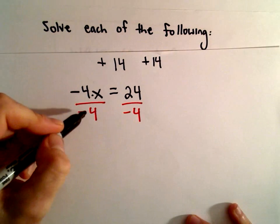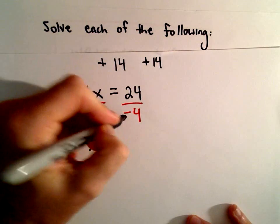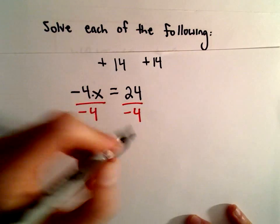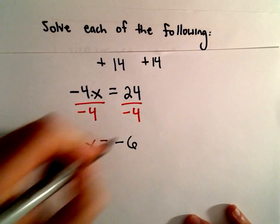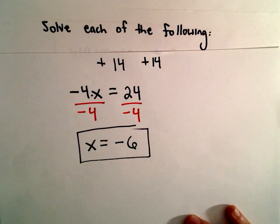So negative 4 divided by negative 4 is 1x. A positive over a negative is a negative. 24 divided by 4 will give us 6. So the solution to our first equation will be x equals negative 6.